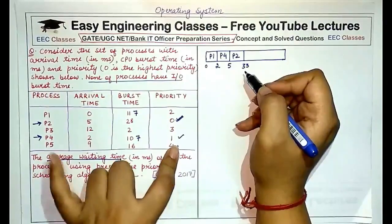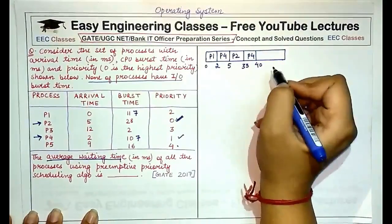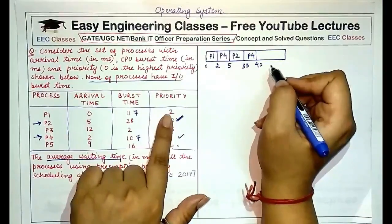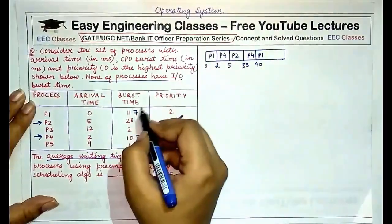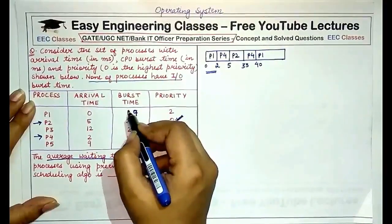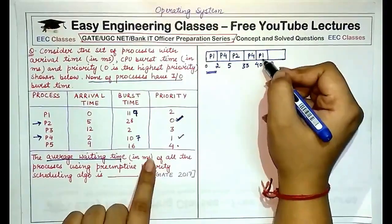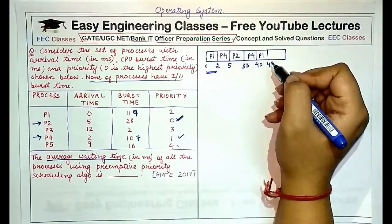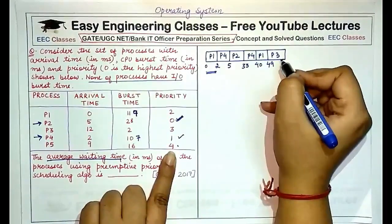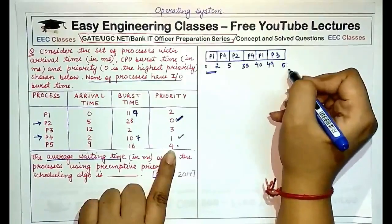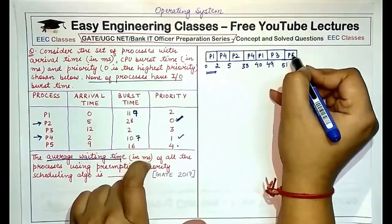After priority zero, the next highest is P4 with priority one. P4 has a remaining time of seven units, so P4 executes from 33 to 40. After P4, next is P1. P1 executed for two units and had a total burst time of 11, so it has a remaining time of nine units, executing from 40 to 49. Then P3 with priority three executes for two units, finishing at 51. Finally P5 executes.